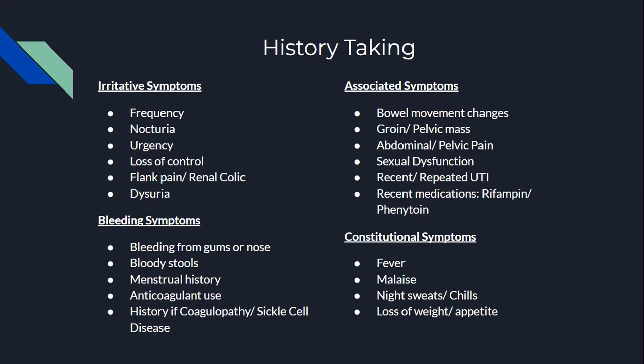Ask about associated symptoms. See if the patient has any changes in their bowel movements. Have they noticed any groin or pelvic masses? Any abdominal or pelvic pain? Have they noticed any sexual dysfunction recently? Have they had a recent UTI or repeated episodes of UTIs? Does the patient use medications such as rifampin, which can change body secretions including urine and tears to orange or red, phenytoin, or cyclophosphamide if they're undergoing chemotherapy?